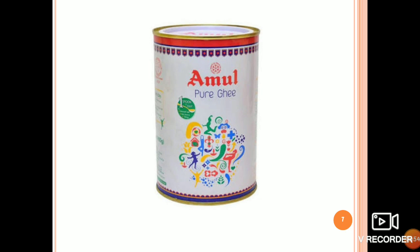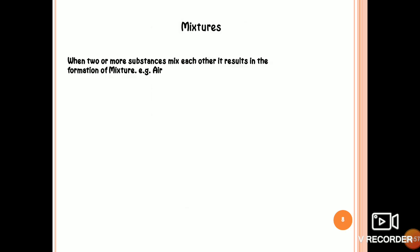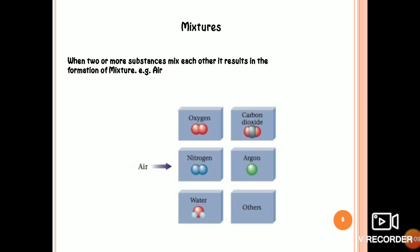Next is mixtures. When two or more substances mix with each other, it results in the formation of a mixture. Example: air. Air is a mixture of gases such as oxygen, nitrogen, water, carbon dioxide, argon, etc. The constituents of this air can be obtained as pure gases separately.